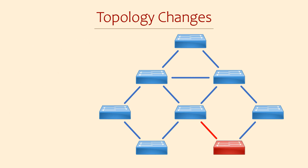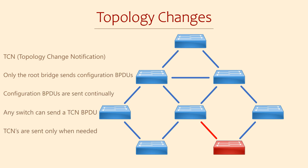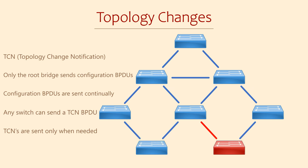The switch will also notify the rest of the topology that there has been a change. It will do this by sending a special type of BPDU called a TCN, or Topology Change Notification. The TCN is sent toward the root bridge, which then floods its own TCN out through the rest of the topology, so the whole switching network gets notified that there has been a change.